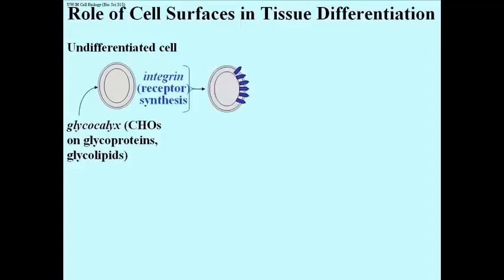During development at some point, integrin will be produced by these cells. The integrin gene will be turned on, the proteins will be synthesized in the rough endoplasmic reticulum, and they end up on the surface of the cell.